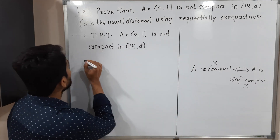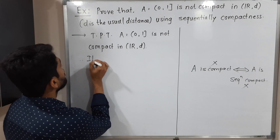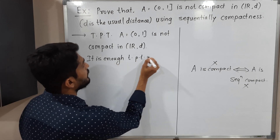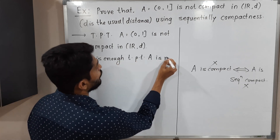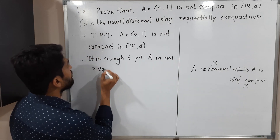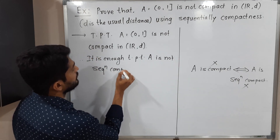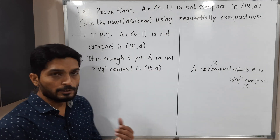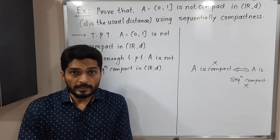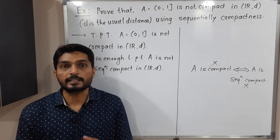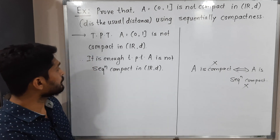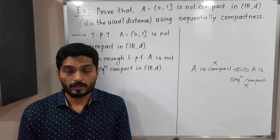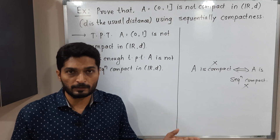Therefore it is enough to prove that A is not sequentially compact in ℝᵈ. Sequentially compact means every sequence should have a convergent subsequence. Here we have to prove it is not sequentially compact, so we have to find a sequence which does not have any convergent subsequence.